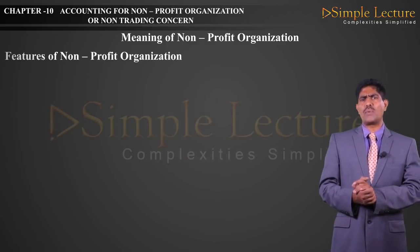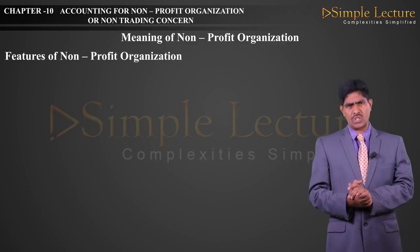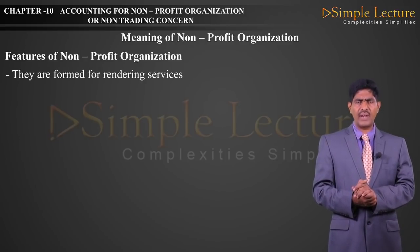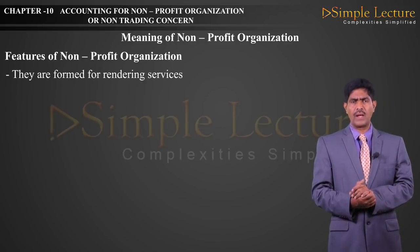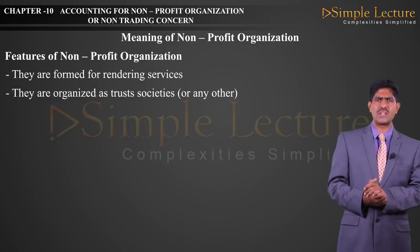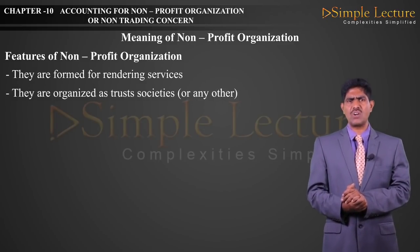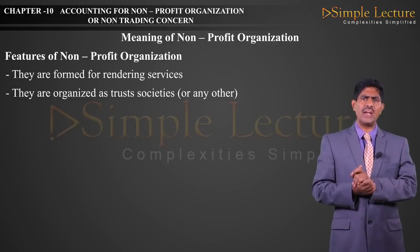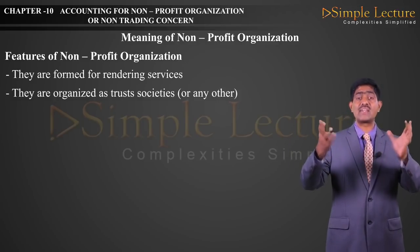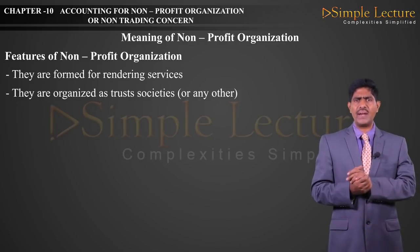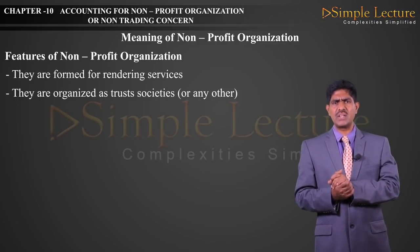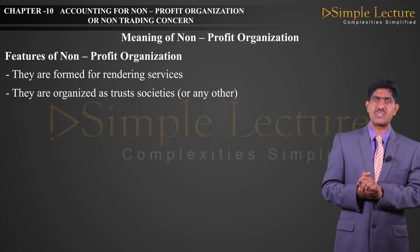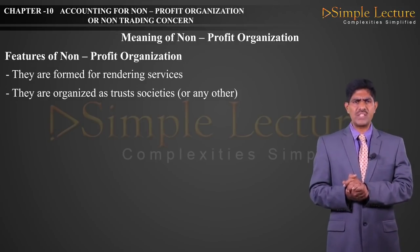Next, the features of Non-Profit Organizations. Feature number one: they are formed for rendering services. Next, they are organized as a trust, societies, or any other form. That means the main features of Non-Trading Organizations are: they are started to render service, not for profit, and their intention is to run a society or organize it as a trust.